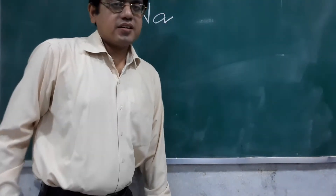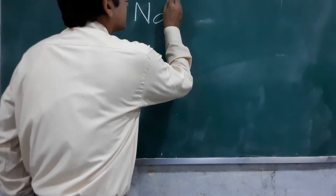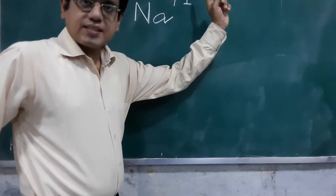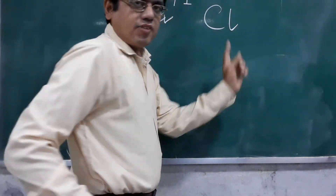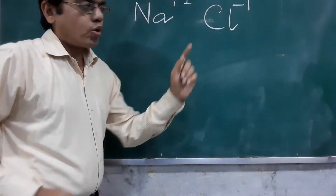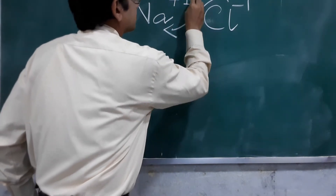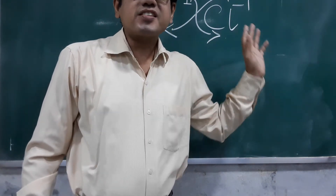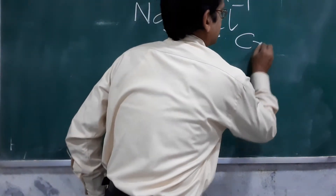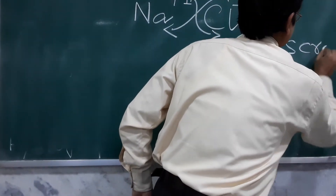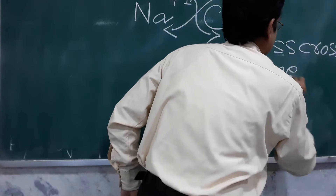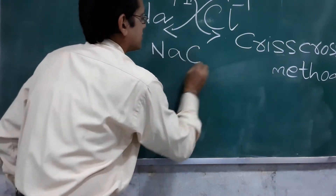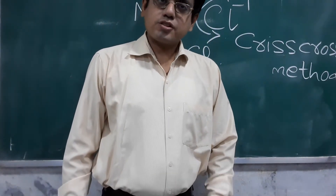Na — and what is its valency? Plus one. What is the valency of chloride, and what is the symbol of chloride? Now just watch — this method is called the criss-cross method. So it becomes NaCl. Understood, students?